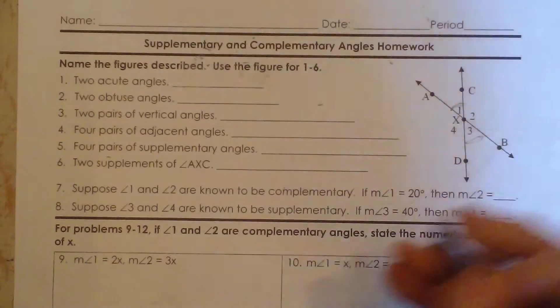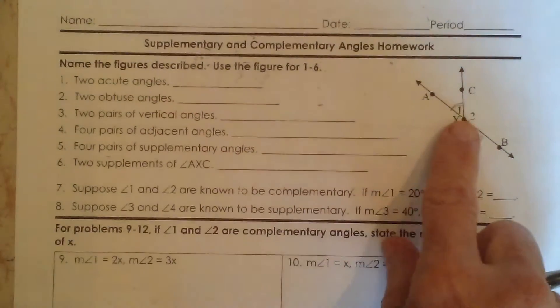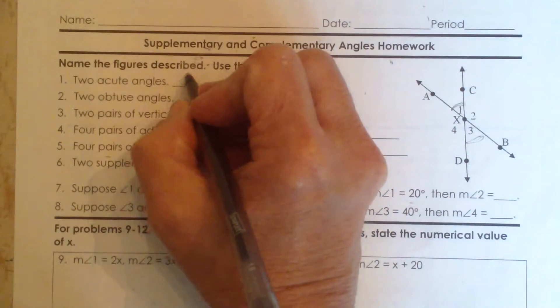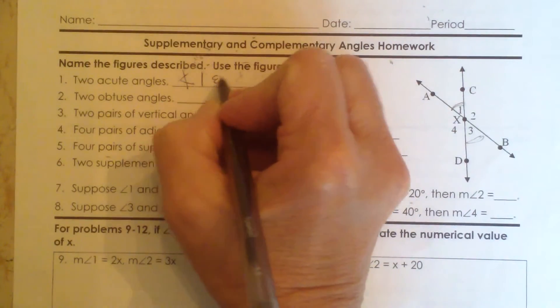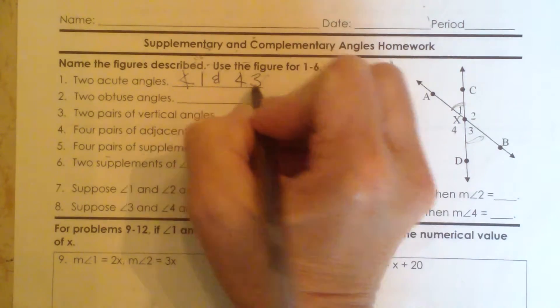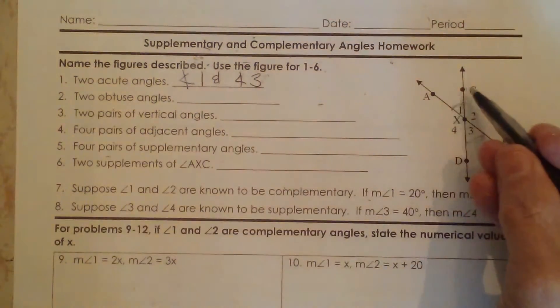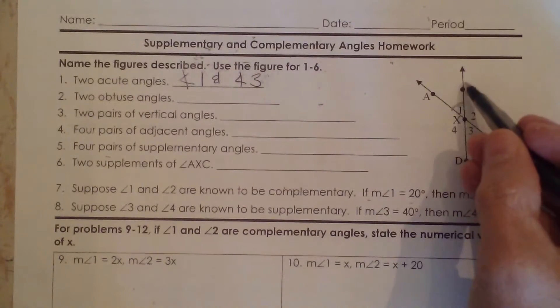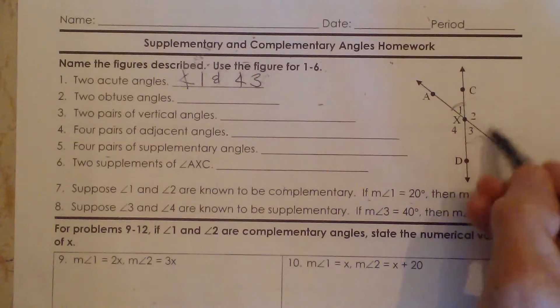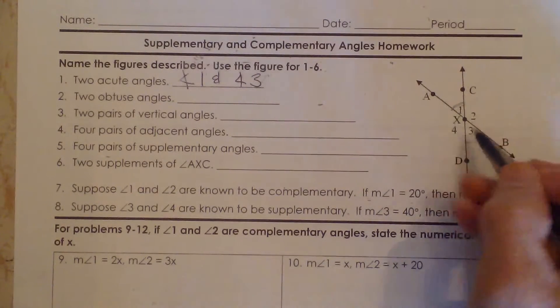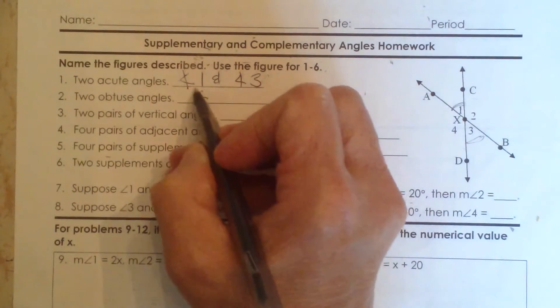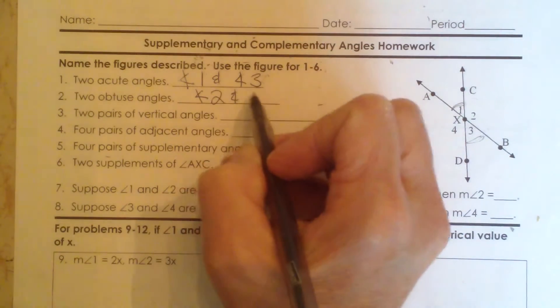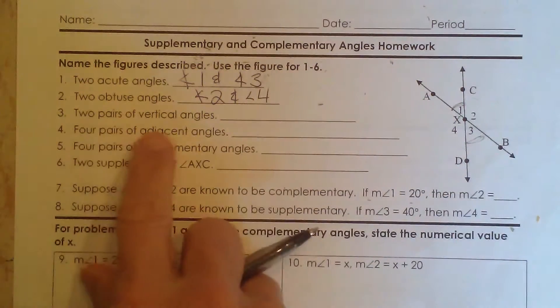Acute angles are angles that are less than 90 degrees, so angle 1 and angle 3 are both acute angles. Obtuse angles, based on this diagram assuming that it is to scale, angle 2 and angle 4 are the larger angles, so those are obtuse angles.